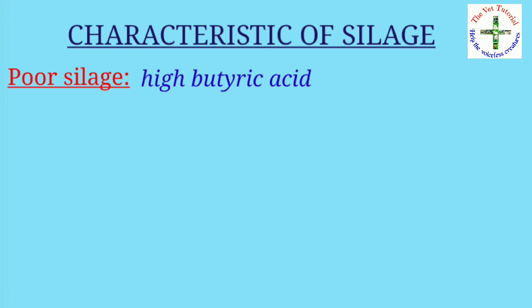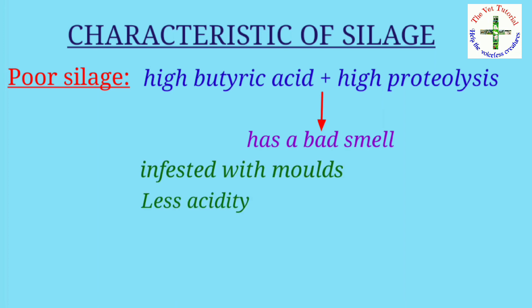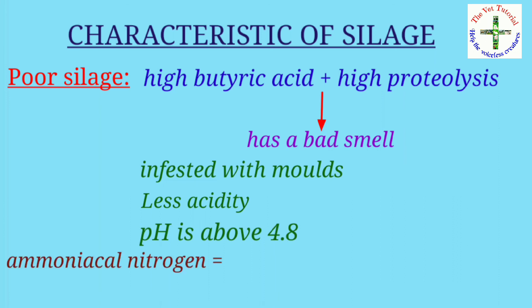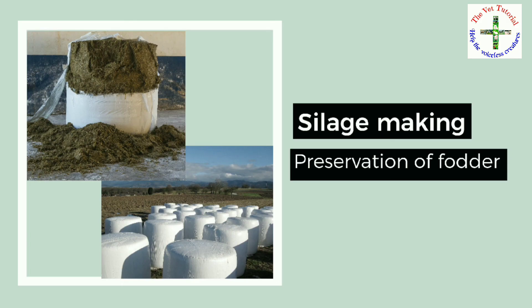The color of fair silage varies from tobacco brown to dark brown. Poor silage, due to high butyric acid and high proteolysis, has a bad smell; may be infested with molds; has less acidity with pH above 4.8; ammoniacal nitrogen more than 20 percent; and color tends to be blackish — poor silage should not be fed to animals.